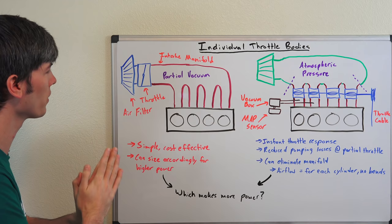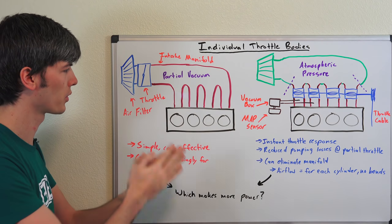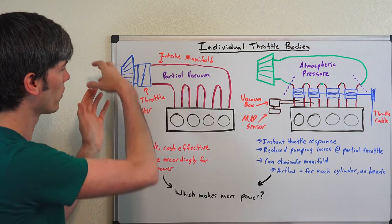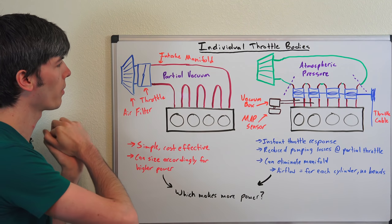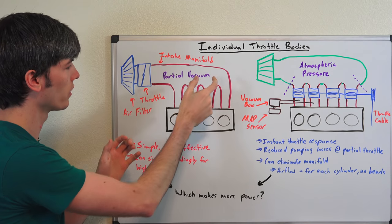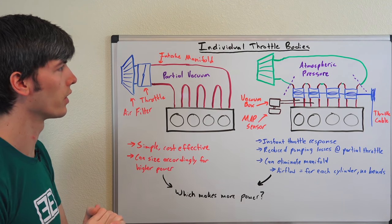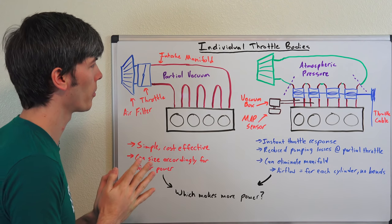Looking here on the left, a very simple setup which you're probably all very familiar with. You have your air intake, a much longer winding path for most vehicles, then you've got your throttle body that goes into your intake manifold and then into your engine.